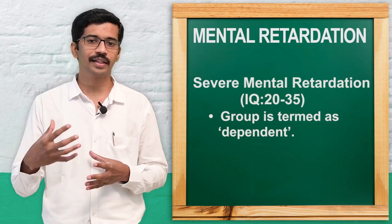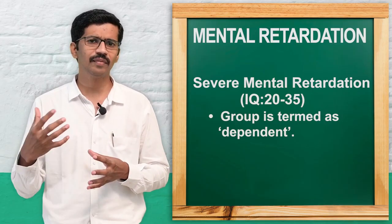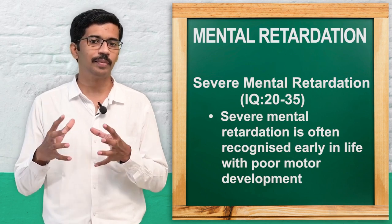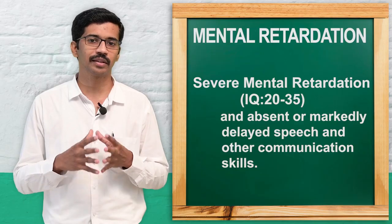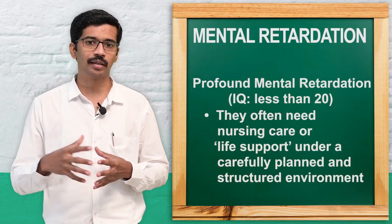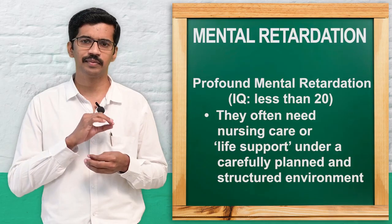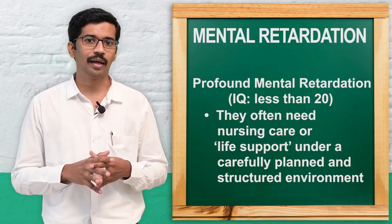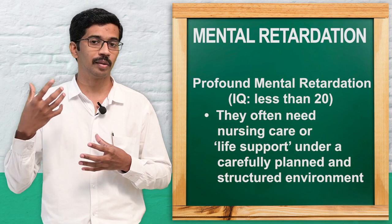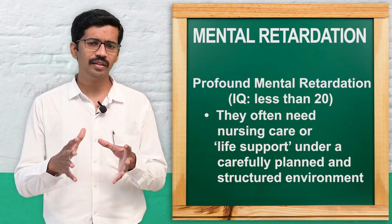Severe mental retardation has an IQ ranging from 20 to 35. These individuals have severe or marked disturbance with communication problems and language development, and are termed a dependent group — most of their activities depend on caretakers or parents. Profound mental retardation has an IQ less than 20. These individuals have marked disturbance across all developmental milestones, may be bedridden, unable to walk or stand, and usually need life support along with management of other medical complications.